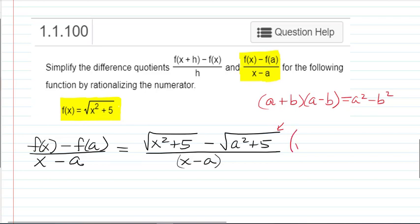We're going to multiply by the square root of x squared plus 5 plus the square root of a squared plus 5. But we have to do it in both the numerator and denominator so we don't change the value of the expression.